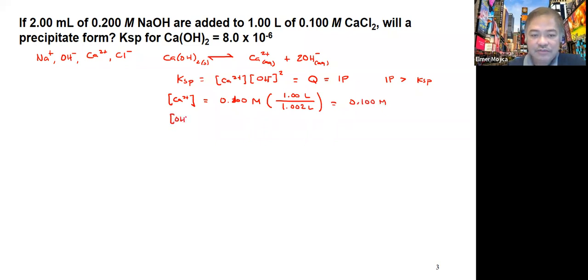Hydroxide, on the other hand, you have here 0.2 molar, and then you divide it by 2 mL divided by 1,002 mL. That's the total volume. They just cancel out here, so this is equal to 4.0 times 10 to the negative 4.